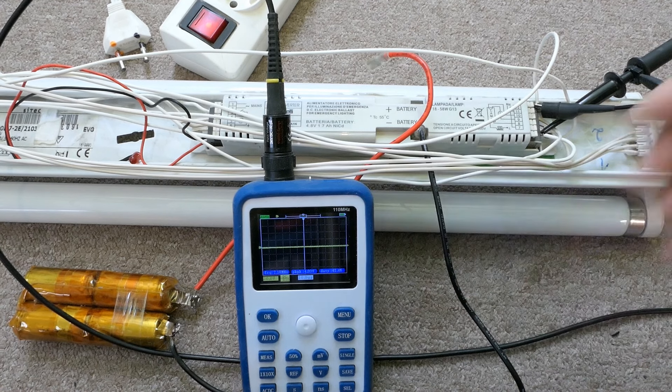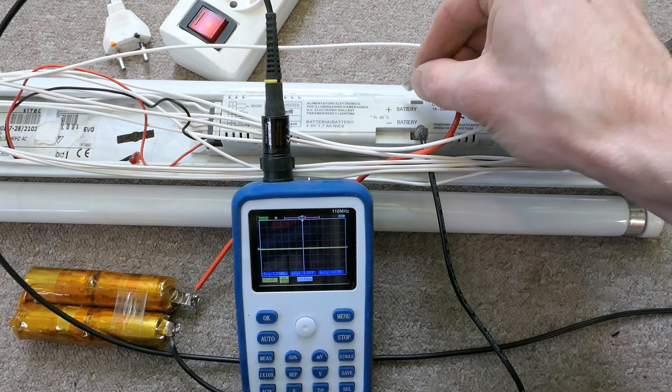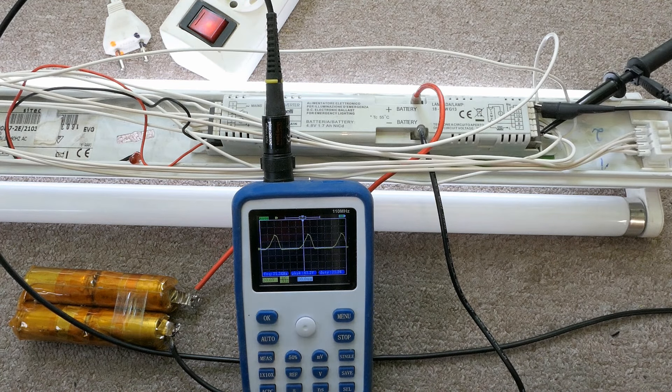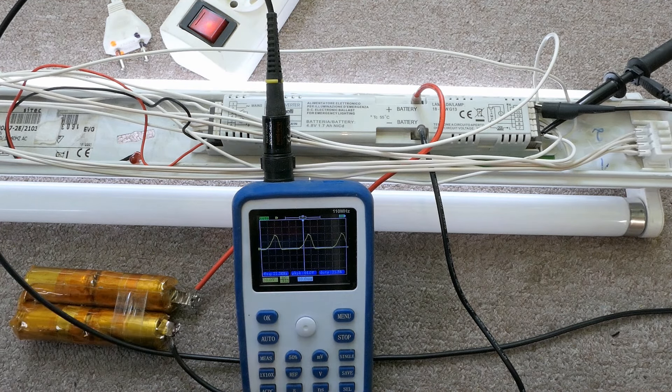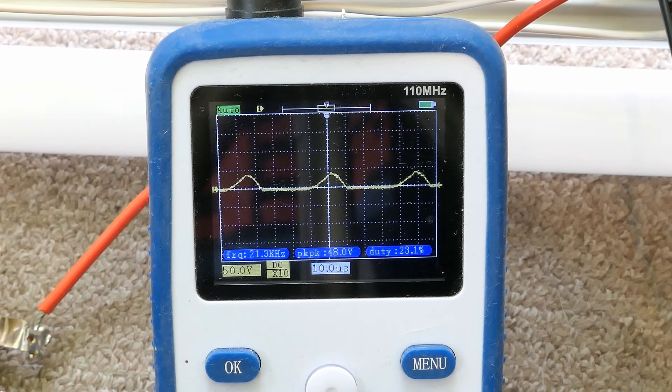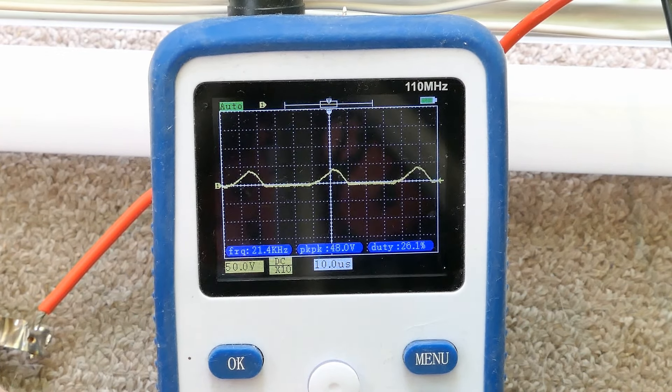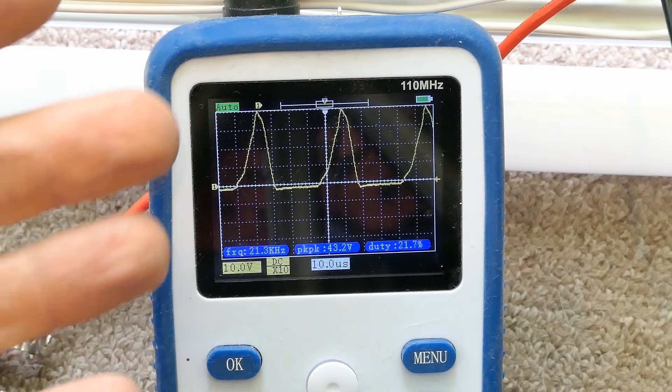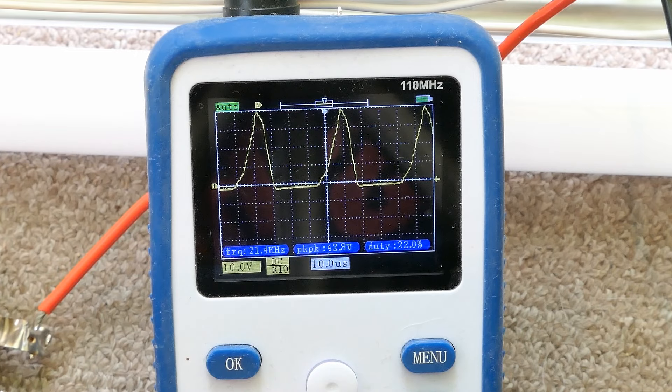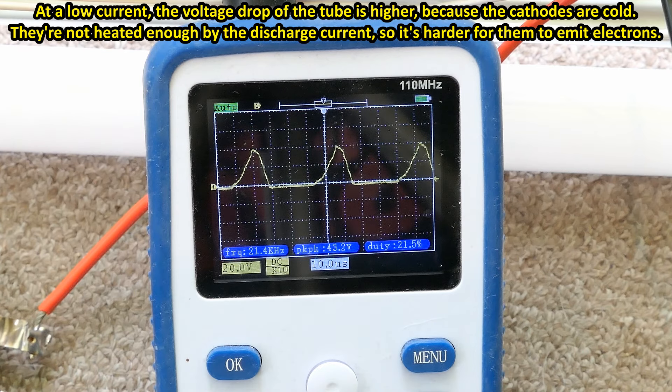And now an oscilloscope and a two-kilovolt probe, connecting between the ends of the backed-up tube. Let's plug in the battery. It's running about 21.3 kilohertz. When starting it's higher voltage then it reduces. The oscilloscope has a setting for times-10 probe, but the high-voltage probe is times-100, so I guess the peak voltage on the tube is about 400 volts now.